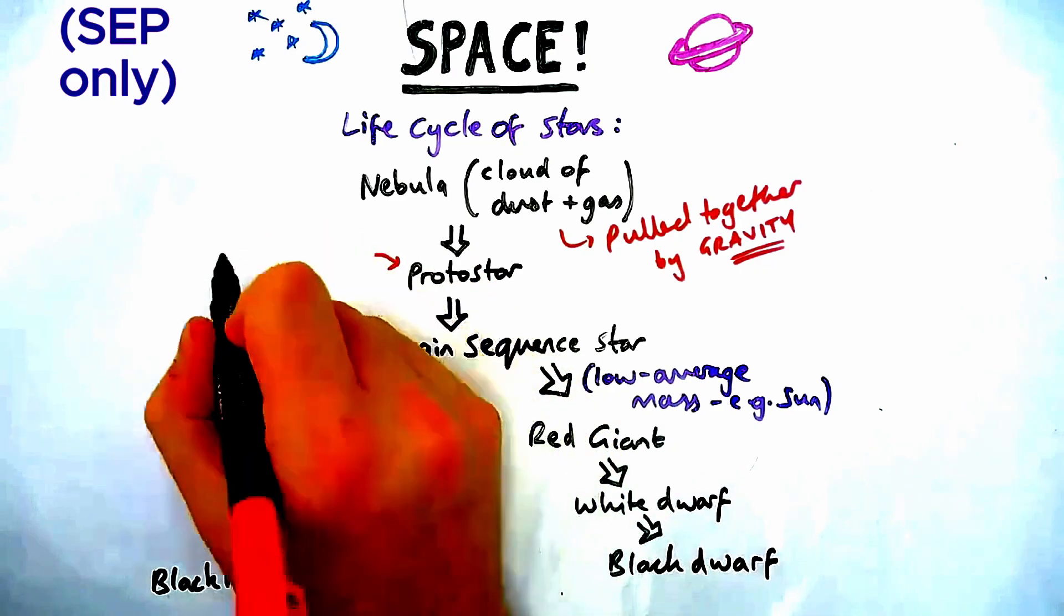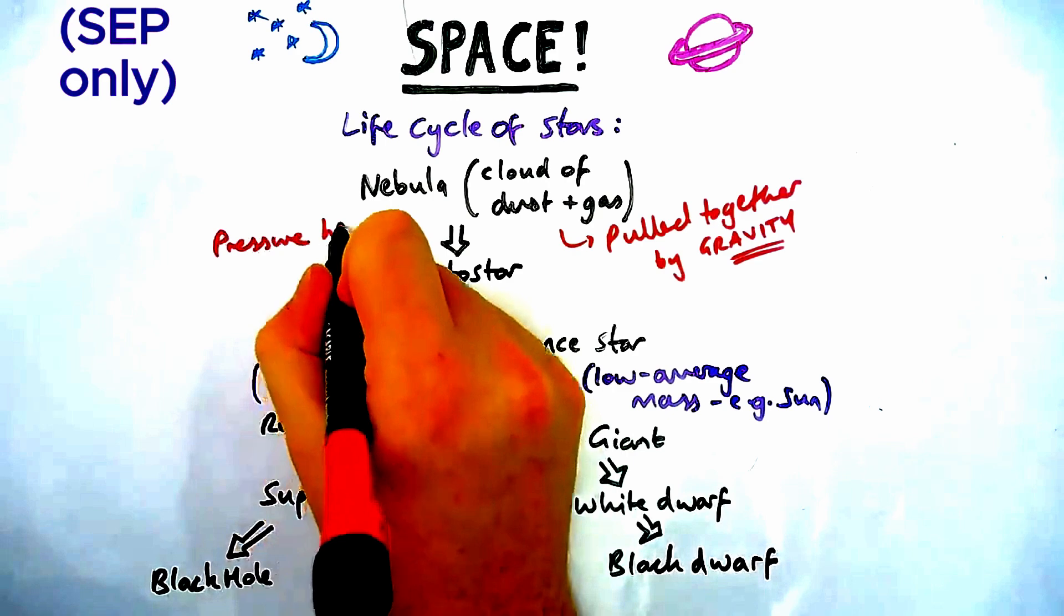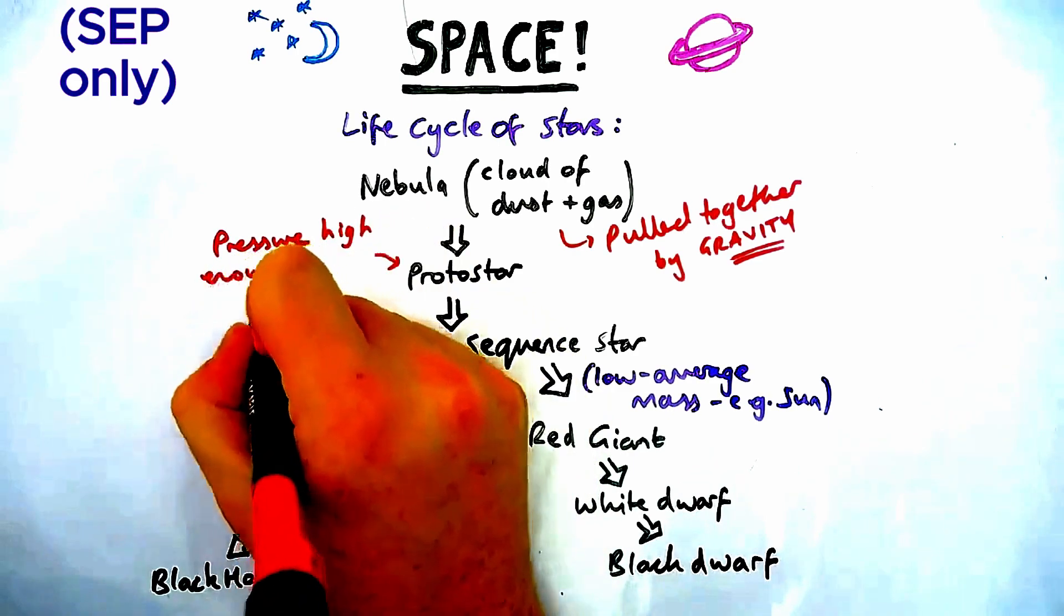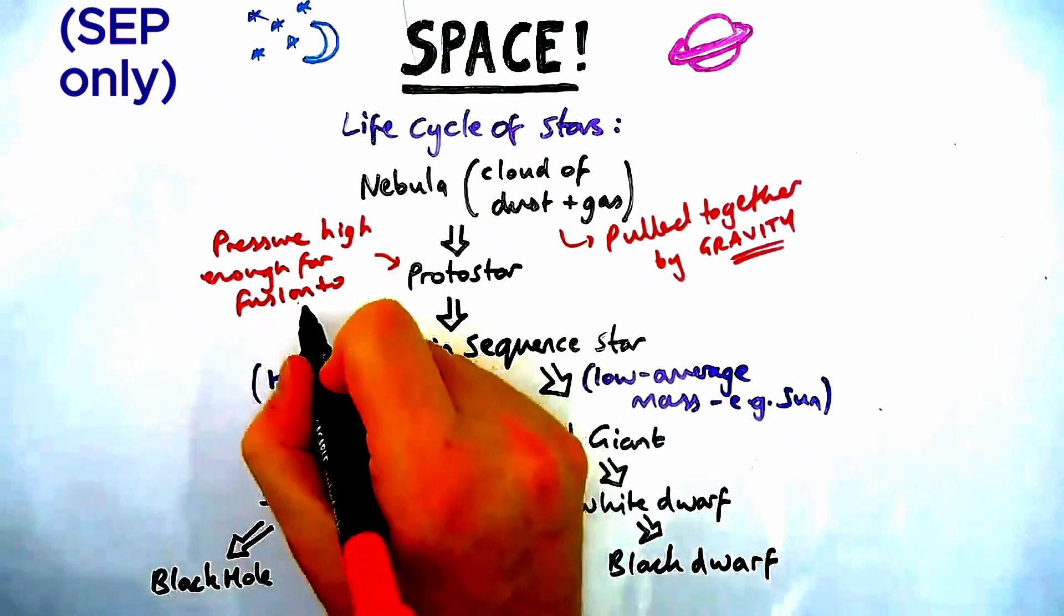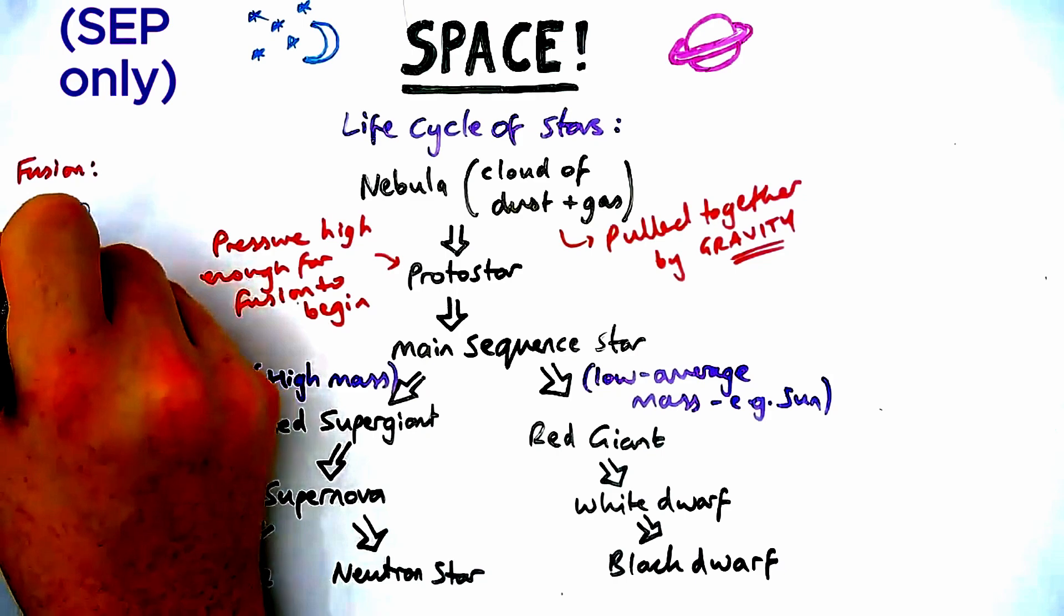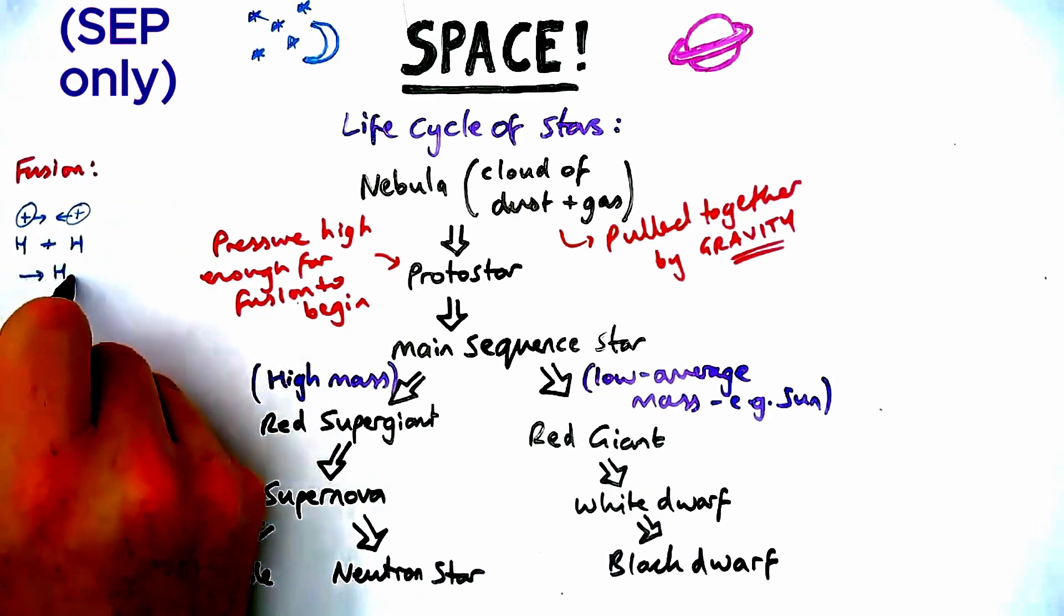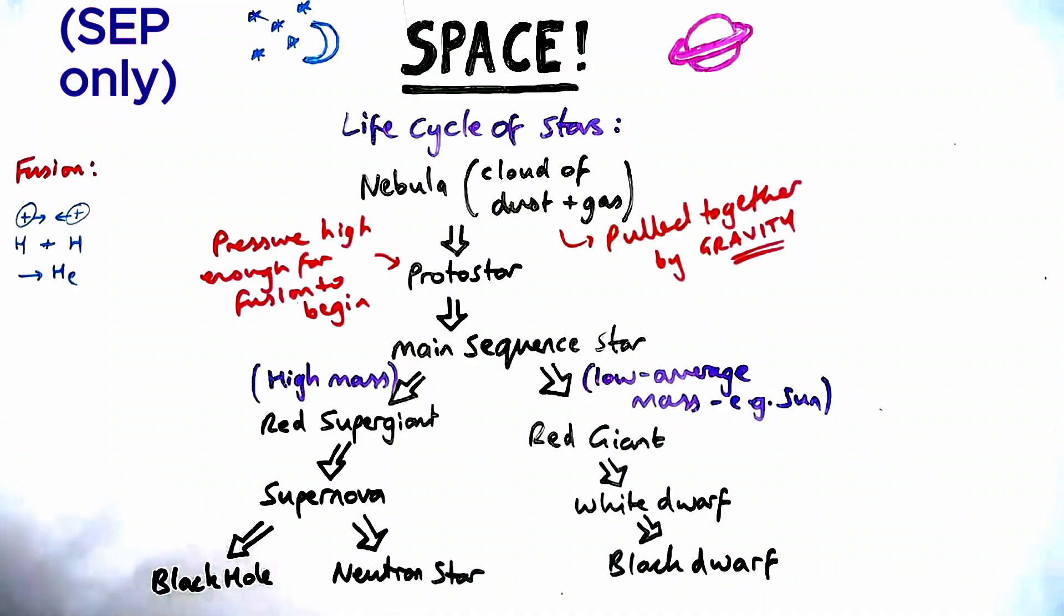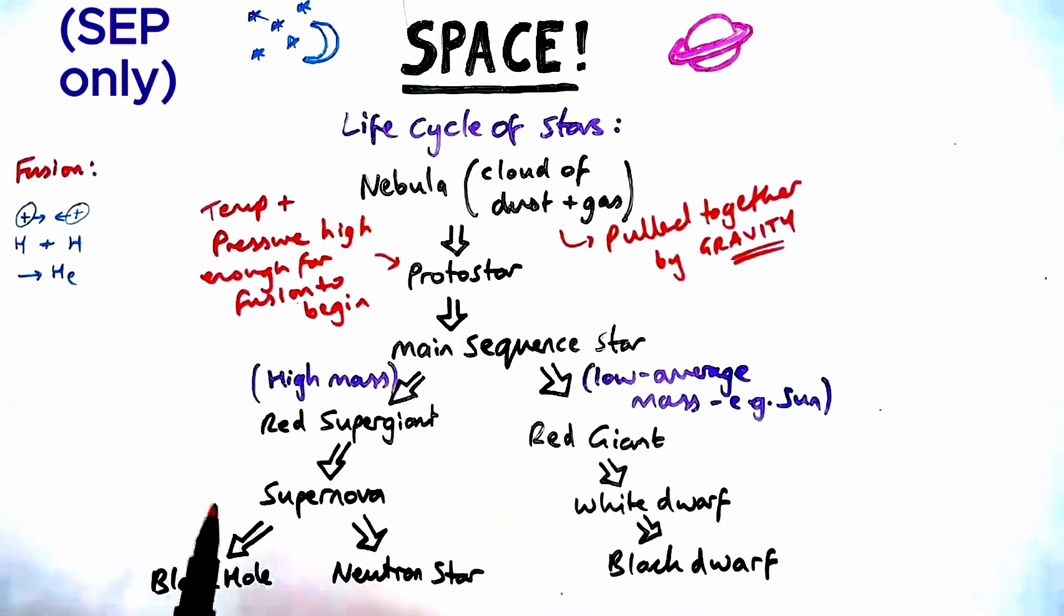When we have our protostar forming, this is the stage before the star. This is when, if pressure and temperature is high enough, nuclear fusion begins. Essentially, nuclear fusion is when two light nuclei, usually hydrogen, combine together to make helium and release energy. This only happens at high temperatures and pressures, so you need a lot of matter in one place under high gravity.